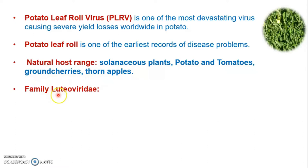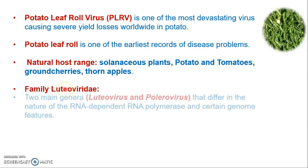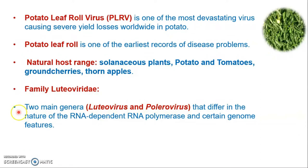Potato Leaf Roll Virus belongs to the family Luteoviridae. This family has two very important genera: Luteovirus and Polero virus. These two genera contain viruses causing severe economic losses in various crops, and they differ from each other in the nature of their RdRp enzyme and other genomic features.